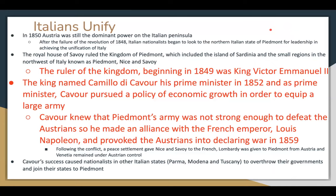Italians unify: in 1850 Austria was still the dominant power on the Italian peninsula. After the failures of the revolutions of 1848, Italian nationalists began to look to the northern Italian state of Piedmont for leadership. The Royal House of Savoy ruled the Kingdom of Piedmont, which included the island of Sardinia and the small regions of northwest Italy. The ruler beginning in 1849 was King Victor Emmanuel II. The king named Camillo di Cavour his prime minister in 1852. Cavour pursued a policy of economic growth to equip a large army, knowing Piedmont wasn't strong enough to defeat Austria alone, so he made an alliance with French Emperor Louis Napoleon and provoked the Austrians into declaring war in 1859.